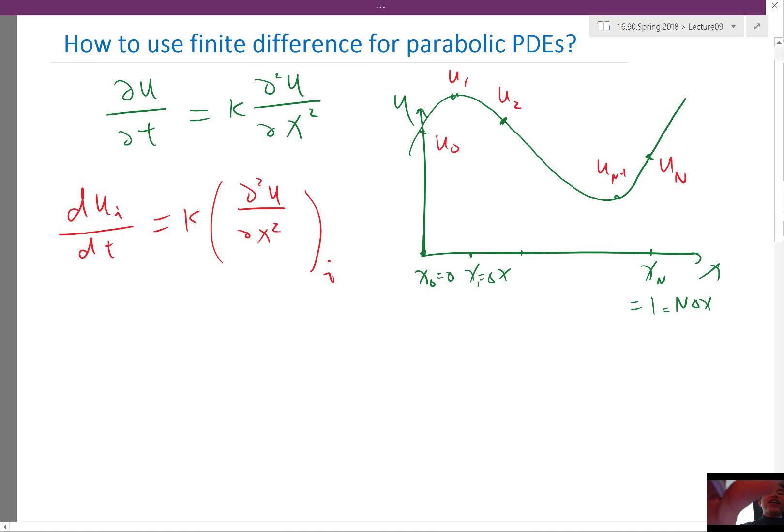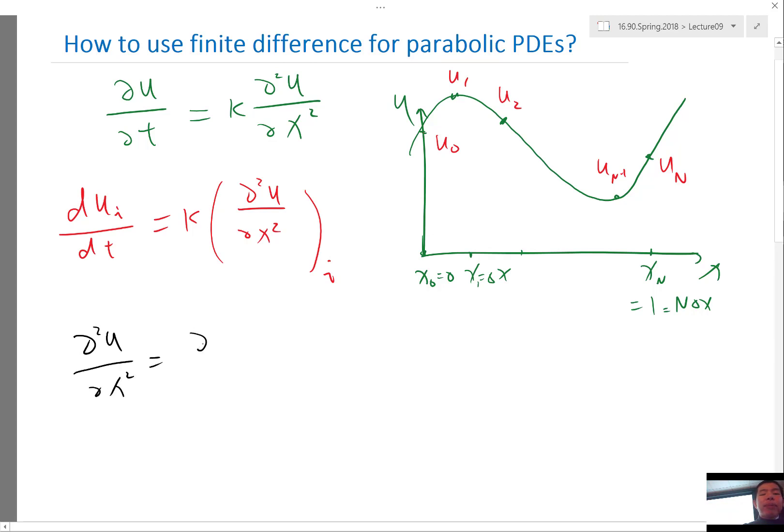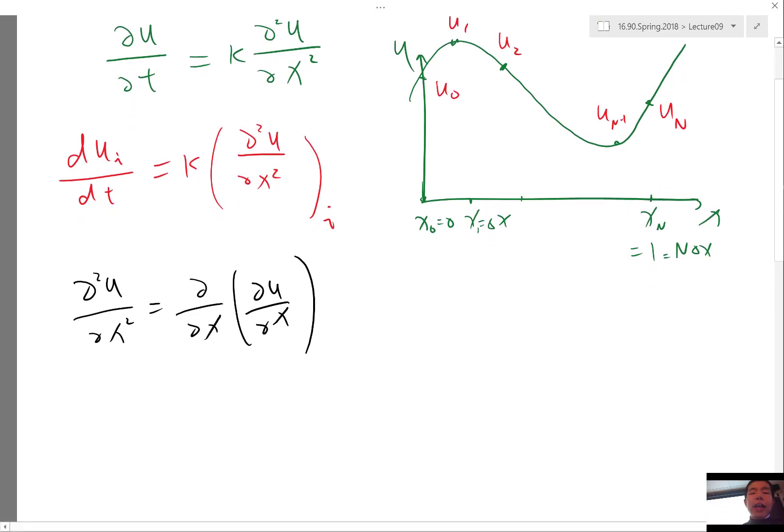Good so one idea is I can use the fact that the second order derivative is by definition the first order derivative of the first order derivative, and we already know how to discretize the first order derivative. So why don't we say that, okay, if my partial u partial x at each grid point i can be approximated as ui plus 1 minus ui minus 1